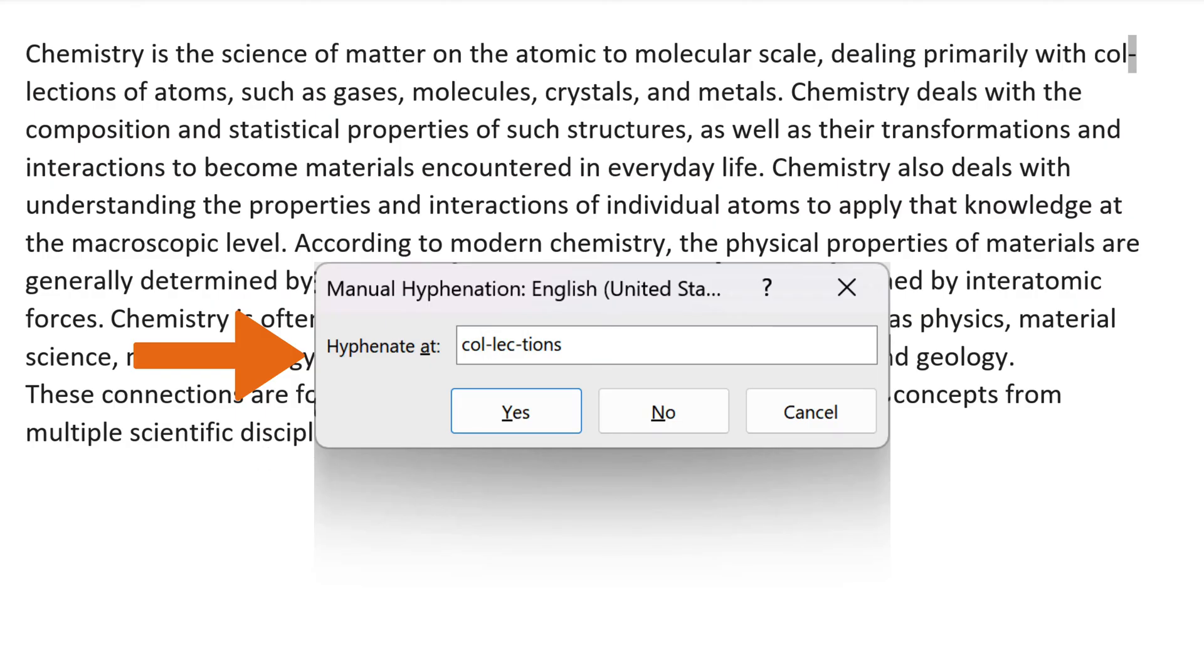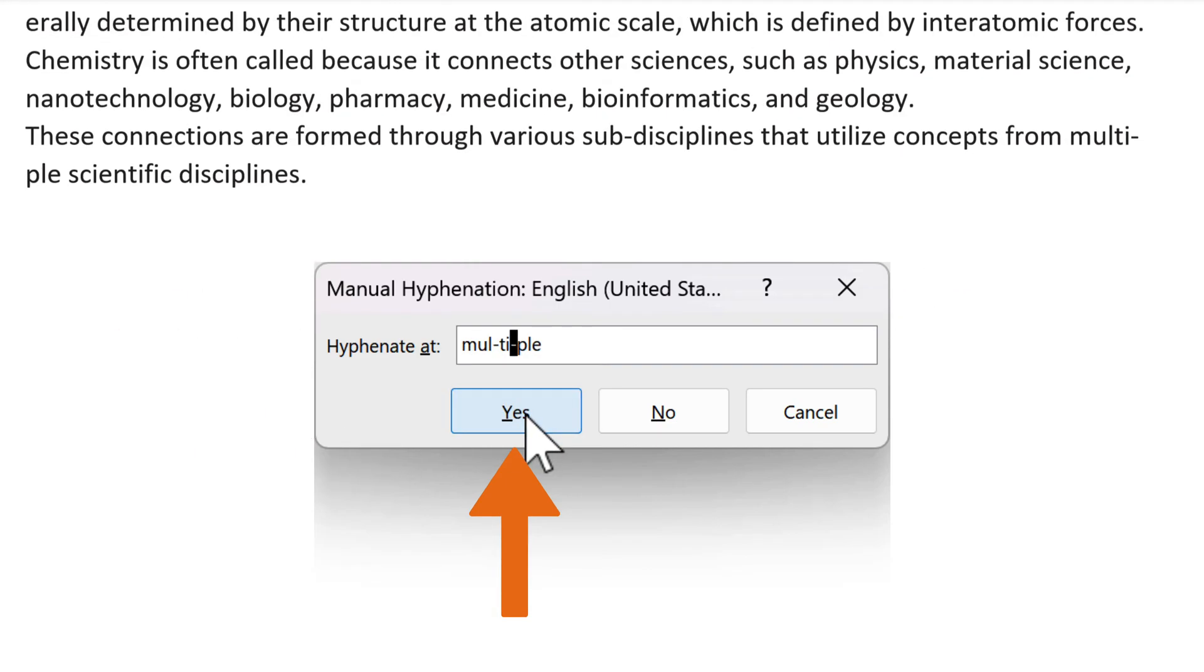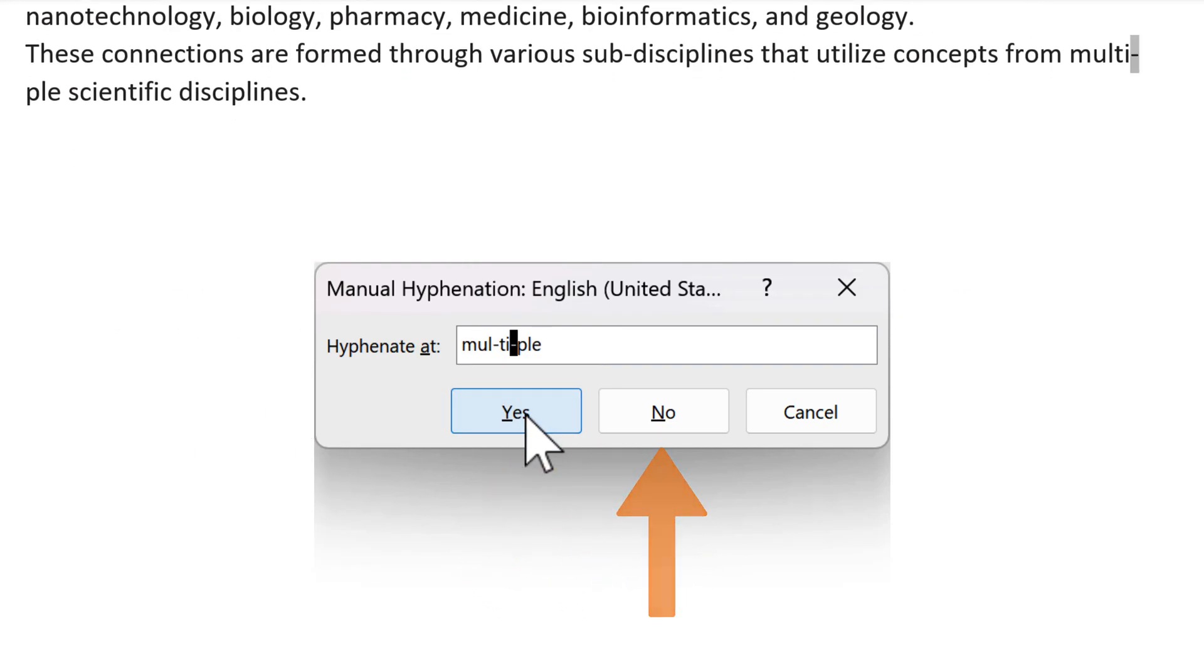Here, you can see that Word suggests automatically where to place a hyphen according to the selected language. You approve it by clicking Yes or disapproving and choosing not to hyphenate the selected word.